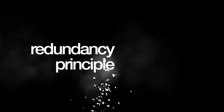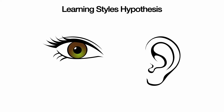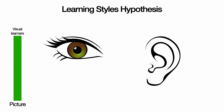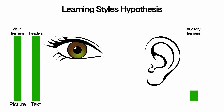What's relevant here is that the redundancy principle directly contradicts the learning styles hypothesis. According to the learning styles hypothesis, visual learners will only focus on the picture, readers will only focus on the text, and auditory learners will only pay attention to the narration. Under this assumption, having pictures, on-screen text, and narration on at the same time is totally fine.